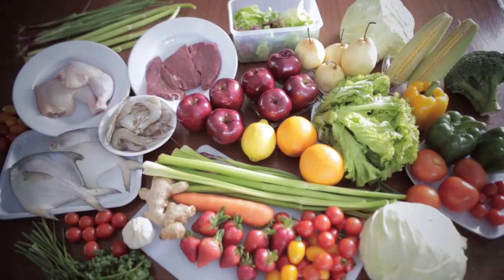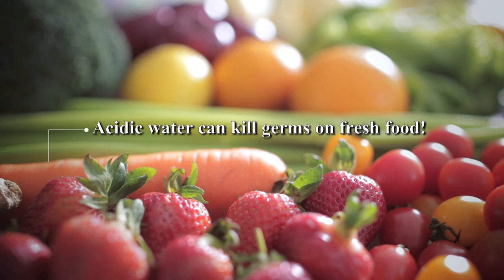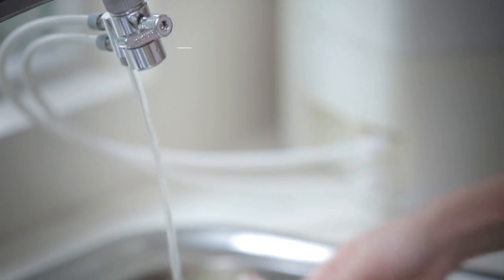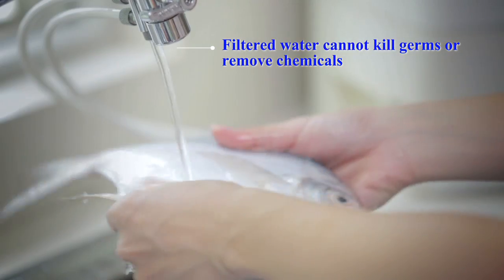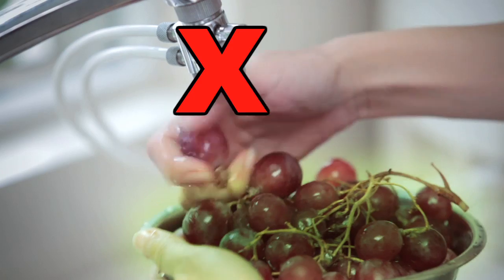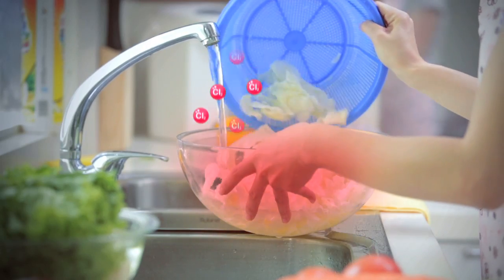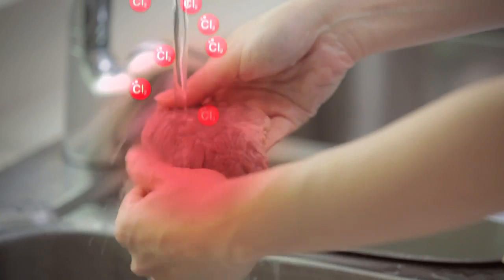However, the most important benefit of acidic water is that it kills the germs on your food. If you wash your food under filtered water, it won't kill any germs because the chlorine has been removed. It doesn't remove chemicals or pesticides either. Tap water, on the other hand, contaminates the food with chlorine while it's being washed.